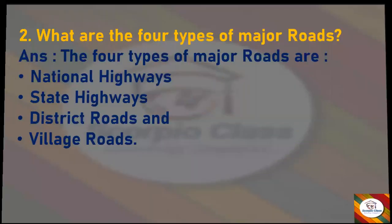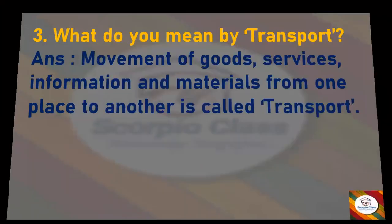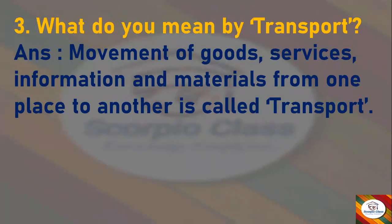Next question: what are the four types of major roads? Answer: the four types of major roads are National Highways, State Highways, District Roads, and Village Roads. Next question: what do you mean by transport? Answer: movement of goods, services, information, and materials from one place to another is called transport.